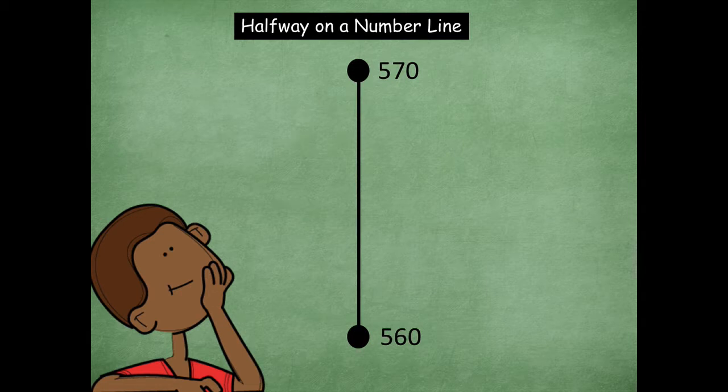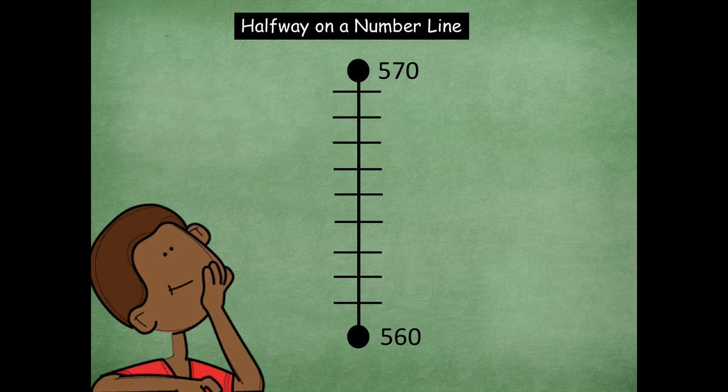All right, next one is 560 and 570. Okay, so you can draw your lines right there. Remember, think about this, you can even cover up that hundreds place and just go between 60 and 70, makes it maybe a little bit easier for us. Okay, because when you're looking at the halfway point, you're still finding, you're looking really to kind of like that one's place. 565. Awesome job, friends.